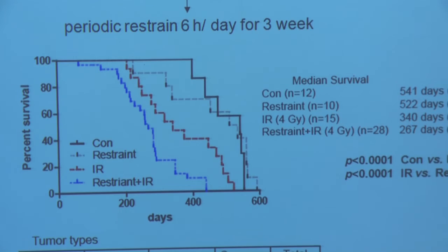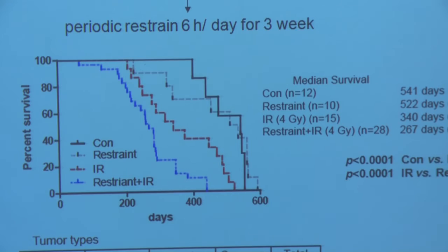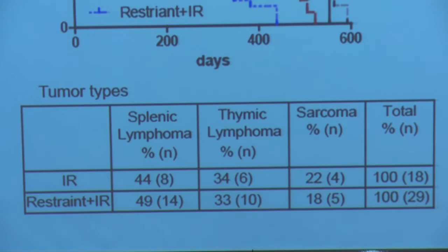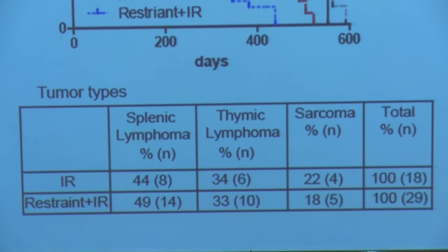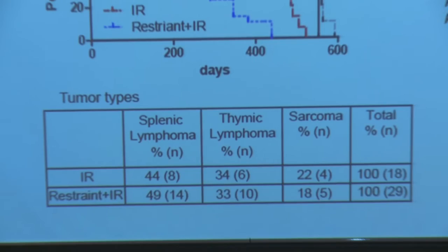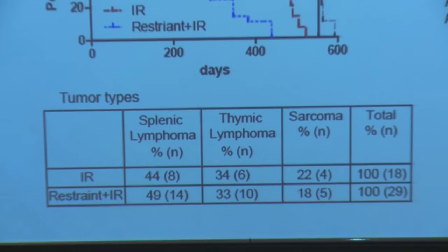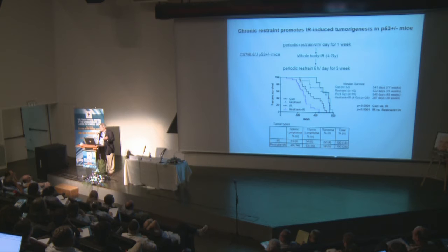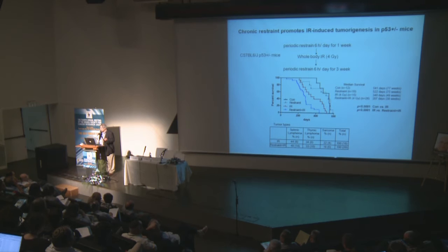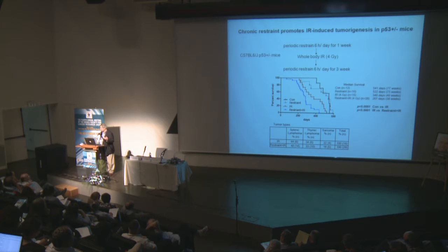The tumors formed — splenic lymphoma, thymic lymphoma, sarcomas — are about the same whether chronic restraint is present or not; they are the tumors formed by radiation in these mice. This says that chronic restraint, with high cortisol levels, makes a mouse more sensitive than one just irradiated, developing tumors at an earlier time frame. That's a psychological stress effect in this mouse model.